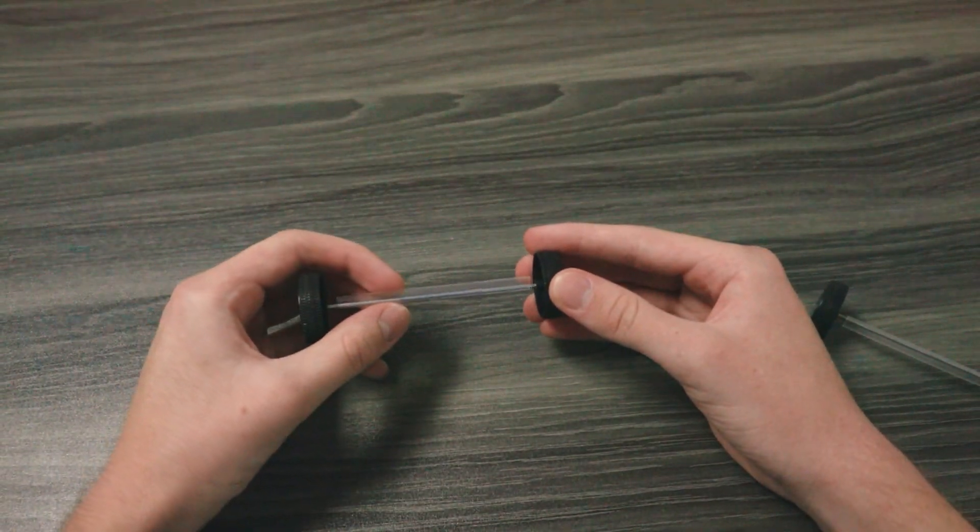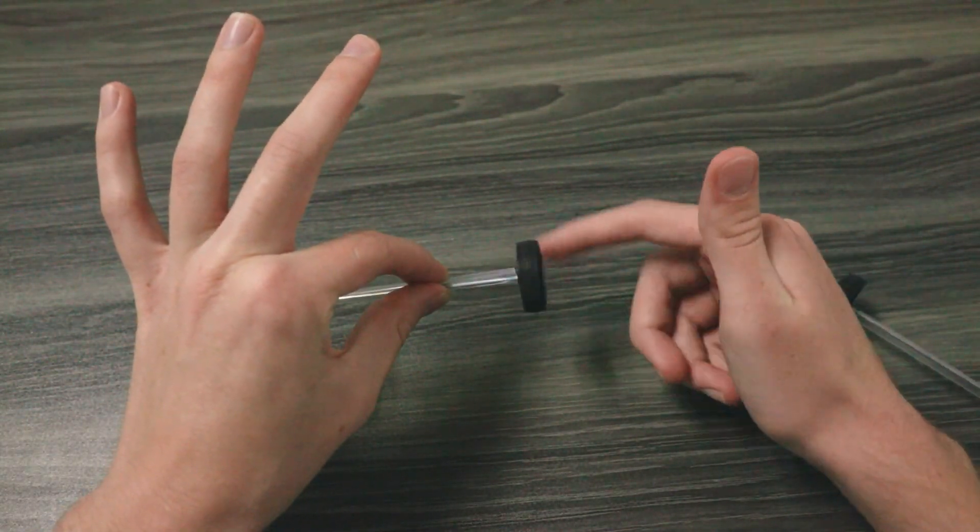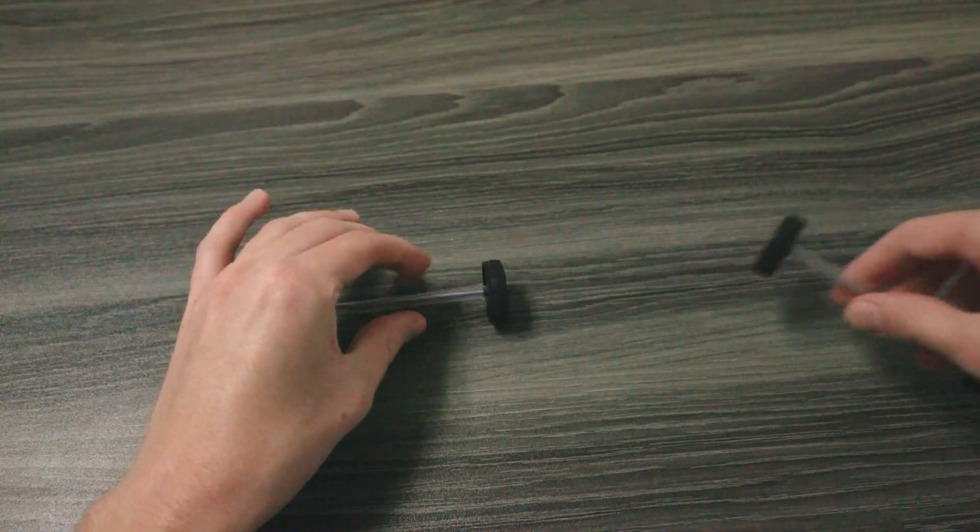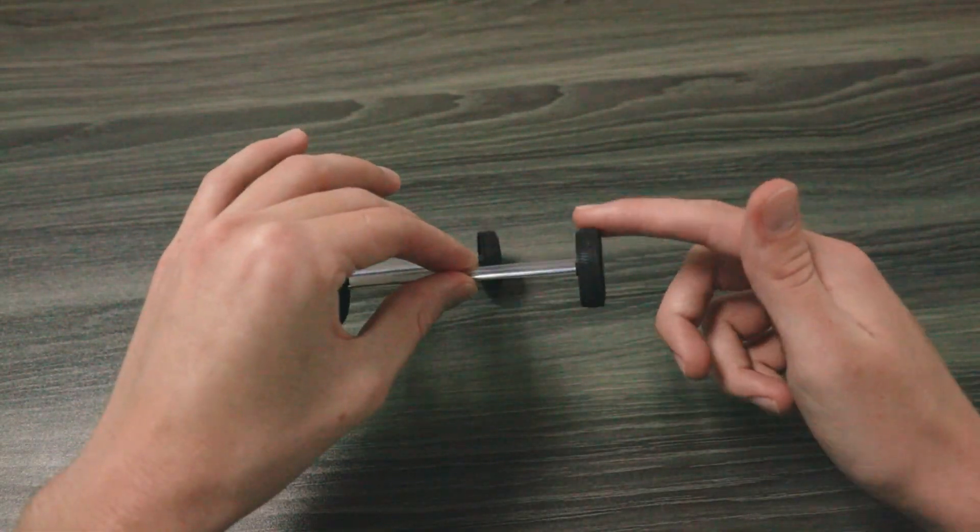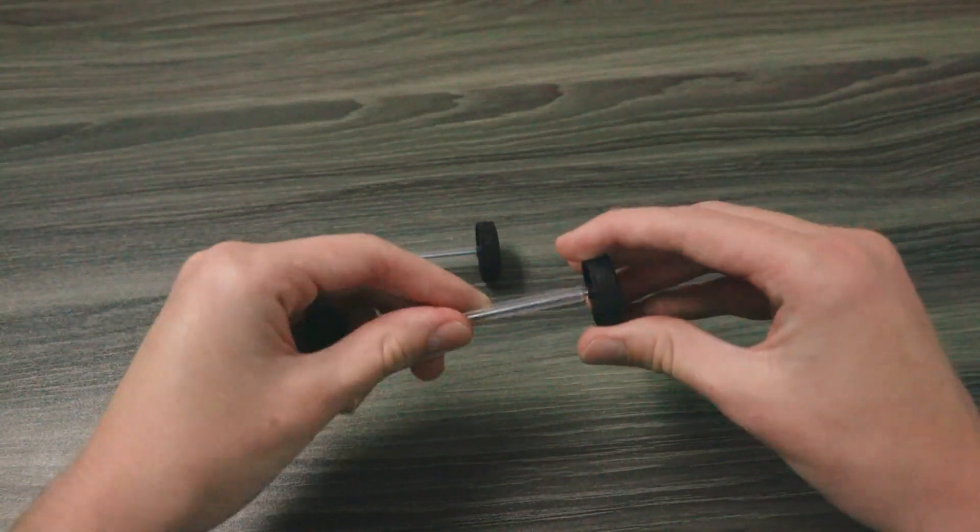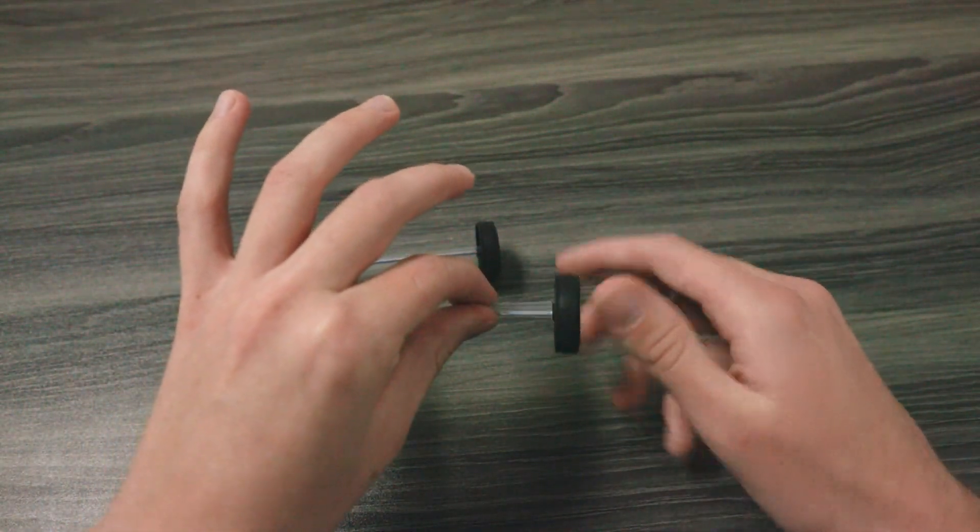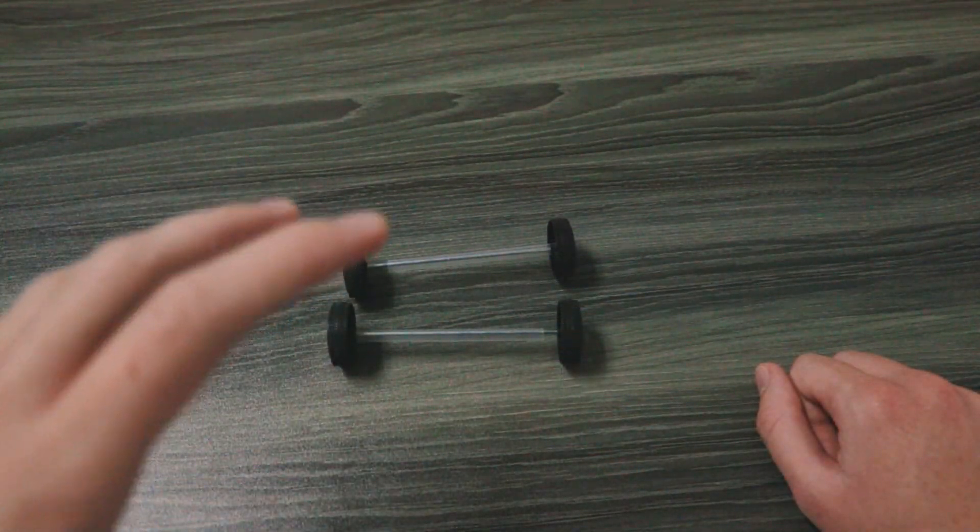Test out both of these rods once you've done this by holding just the straw and ensuring that the wheels are able to spin freely. If they don't spin easily you can remove the wheel by just pulling and then cut the straw down so that the wheels are able to spin freely.